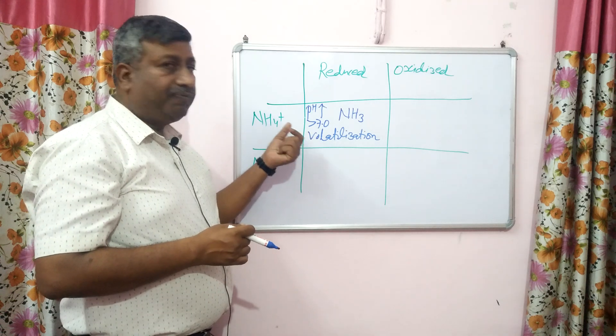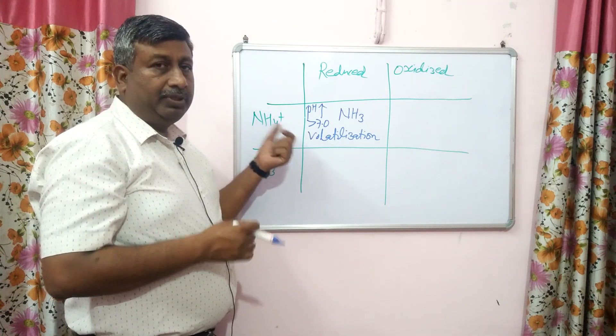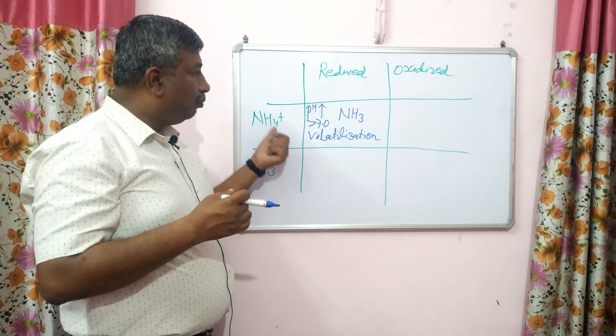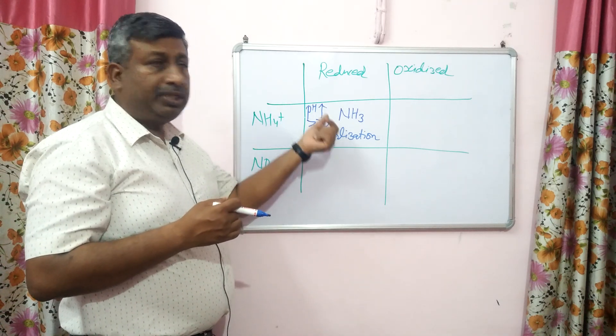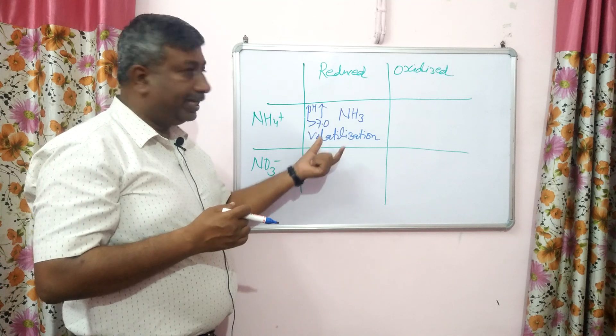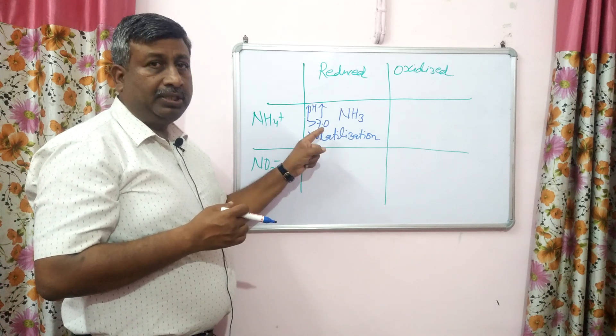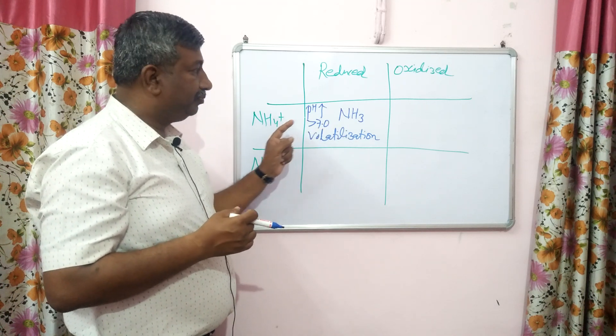So volatilization involves the ammonium ion being converted into ammonia gas. This is the loss of nitrogen under reduced condition with high pH.